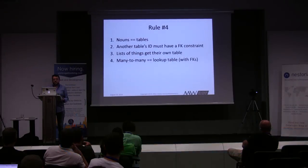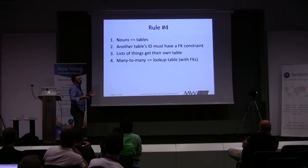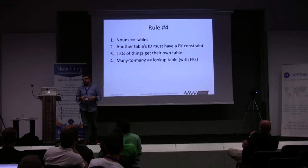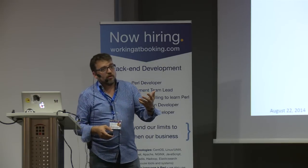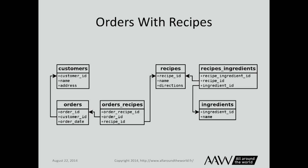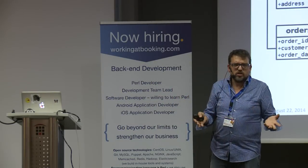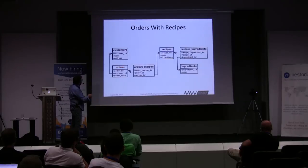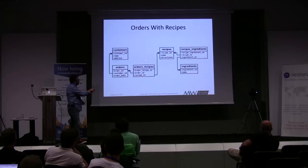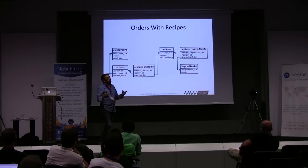Rule number four: many-to-many relationships use a lookup table, with foreign key constraints against the other tables to prevent inserting bogus data. Applying this to orders and recipes: an order can have many recipes, and a recipe can be on many different orders — another many-to-many relationship. So we have an order_recipes lookup table with order_id pointing to orders and recipe_id pointing to recipes. That allows an order to have many recipes and a recipe to be on many different orders.